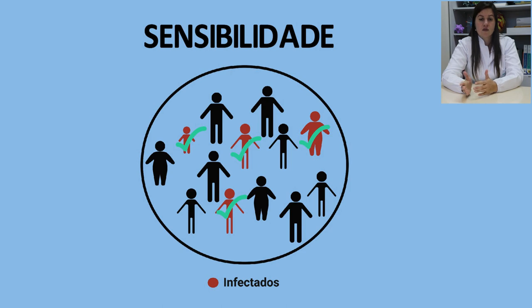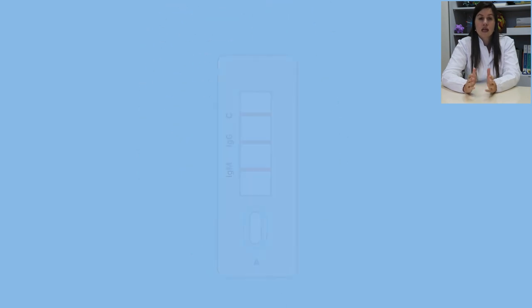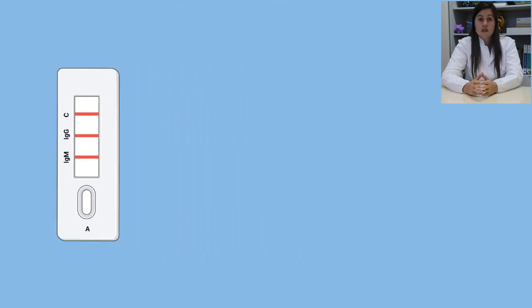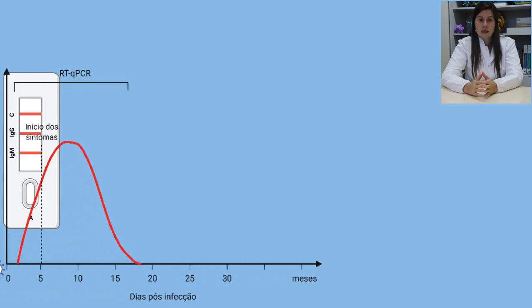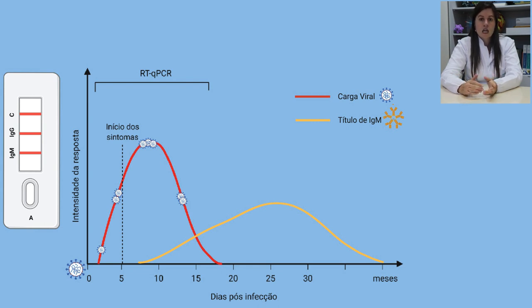Ou seja, a pessoa ser positiva e o teste dar negativo. Olhando para um teste rápido positivo, o que podemos tirar de conclusão? Considerando o gráfico que vimos lá na aula 3, e lembrando o tempo para a produção de anticorpos contra o novo patógeno pelo nosso organismo, os anticorpos do tipo IgM são os primeiros a aparecer. E para o novo coronavírus, isso leva em torno de 5 a 7 dias. Durante esse período, pode-se ainda estar infectado e transmitindo o vírus.